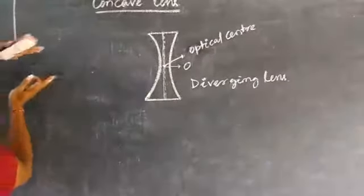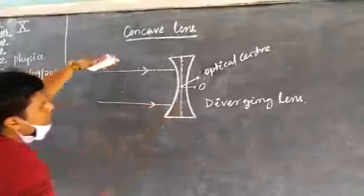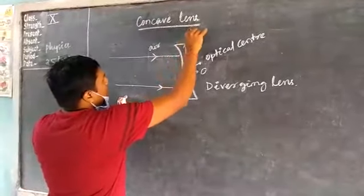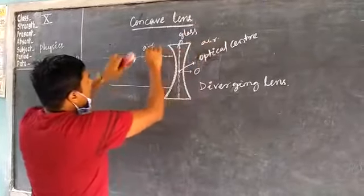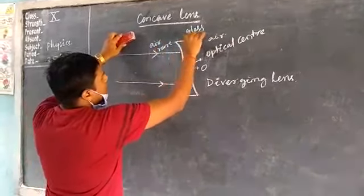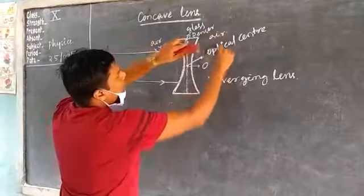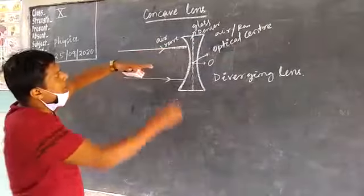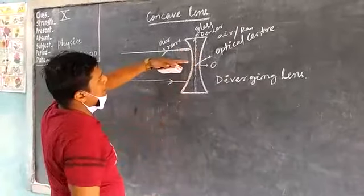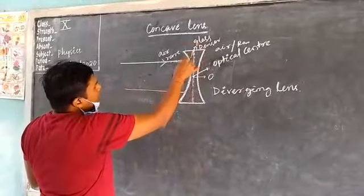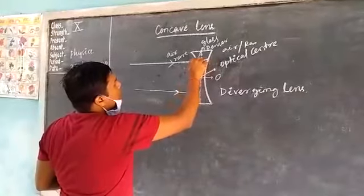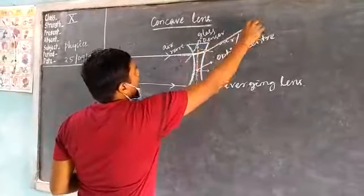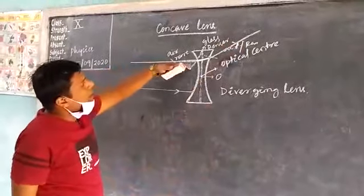When one ray of light passes through this concave lens — see here — this is the air medium, this is the glass medium, and this is again the air medium. Air medium means a rarer medium and glass medium means a denser medium. When the ray of light passes through this lens, its bending will be changed. There are two surfaces, so towards the normal, and then away from the normal. In this way, the ray of light diverges.